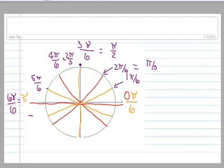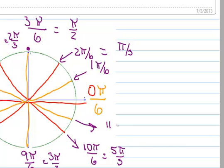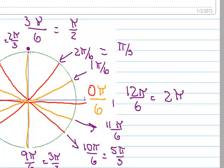Following suit, this is seven pi over six. This one is eight pi over six, which reduces to four pi over three. This bottom one is nine pi over six, which reduces to three pi over two. This one is ten pi over six, which reduces to five pi over three. This one is eleven pi over six, which doesn't reduce. And then we're back all the way around: twelve pi over six, which reduces to two pi.